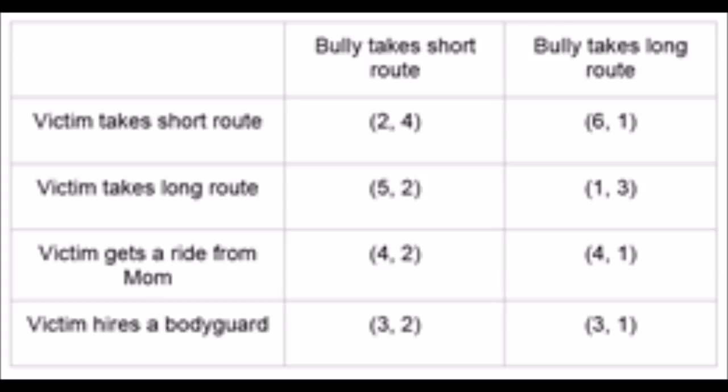Here is the full payoff matrix of this scenario. Unfortunately, there are no equilibrium points for this scenario. The victim would always elect to walk home along the route not taken by the bully, whereas the bully would always elect to walk along the same route as the victim. Thus, one or the other would always want to alter their strategy.